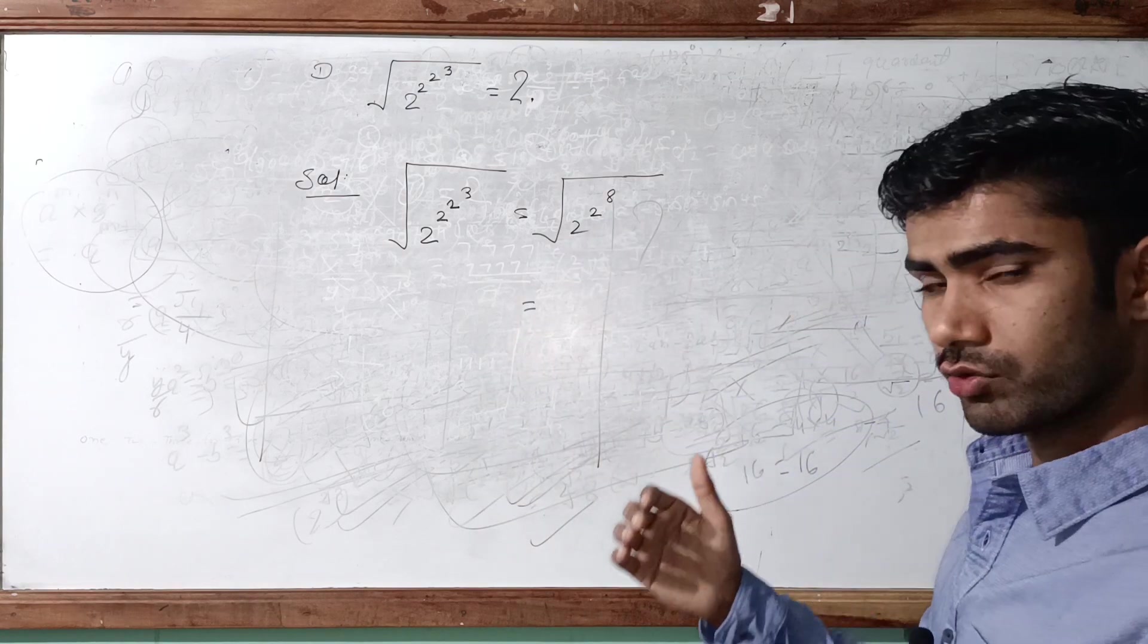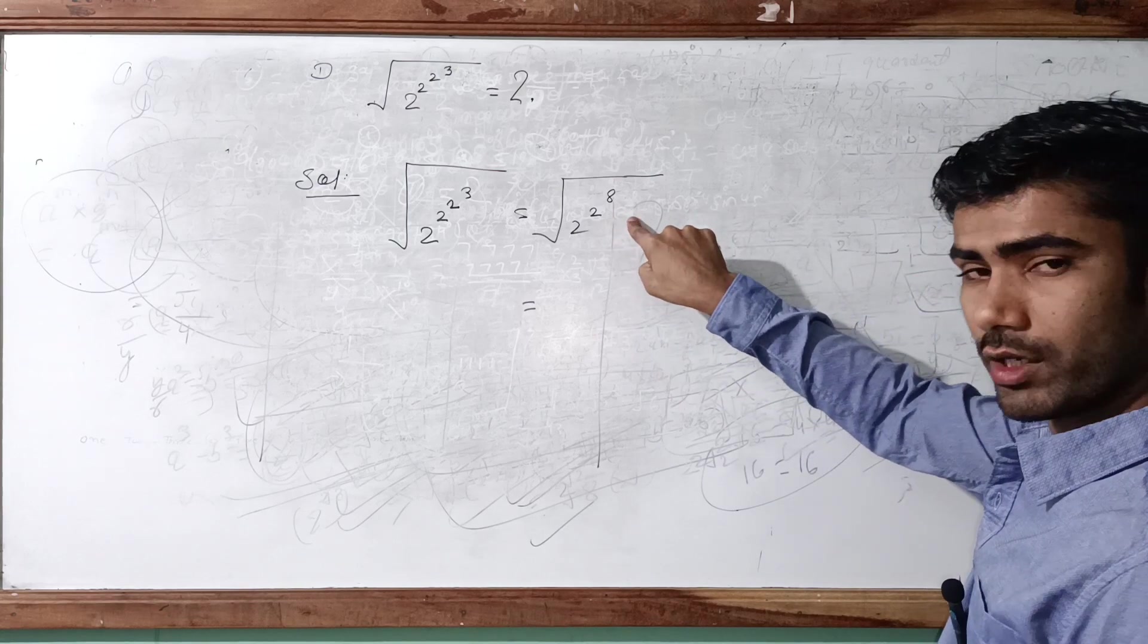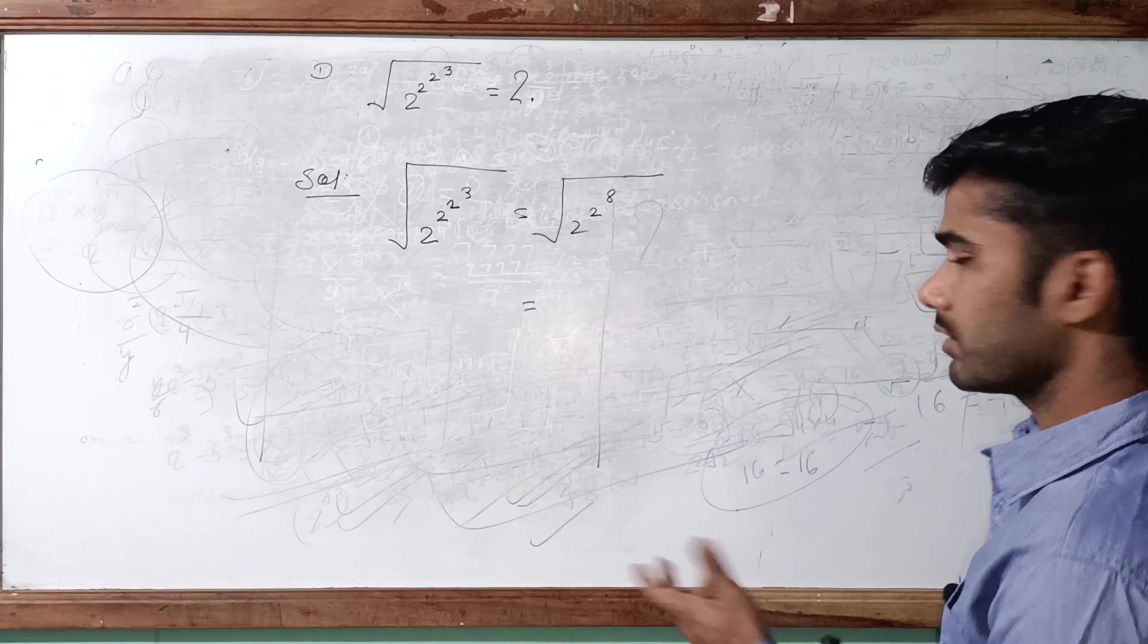Is it clear to you? Because 2 raised to 3 is equal to 8. Now 2 raised to 8, 2 raised to 8 becomes 256, isn't it? That will already there, 2 raised to 8 is 256.